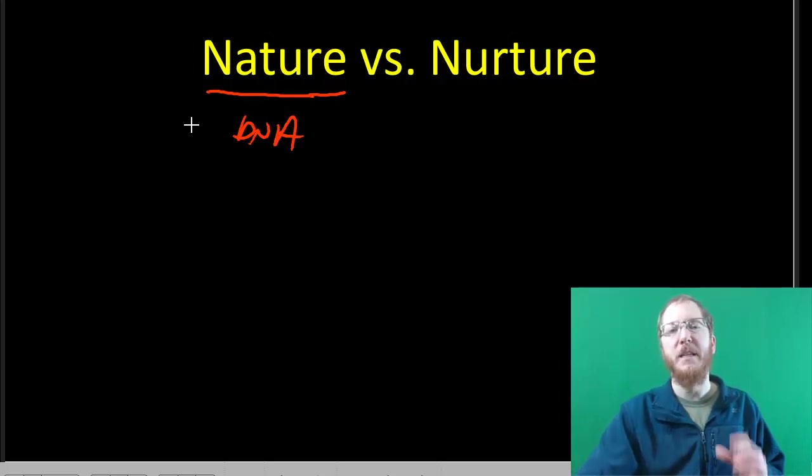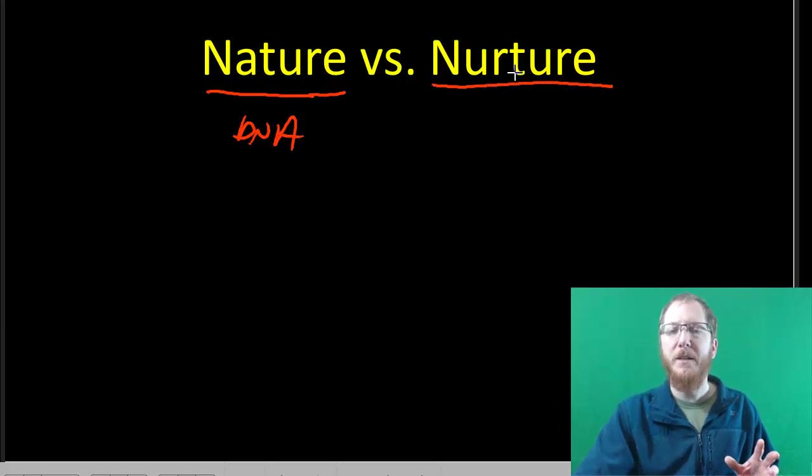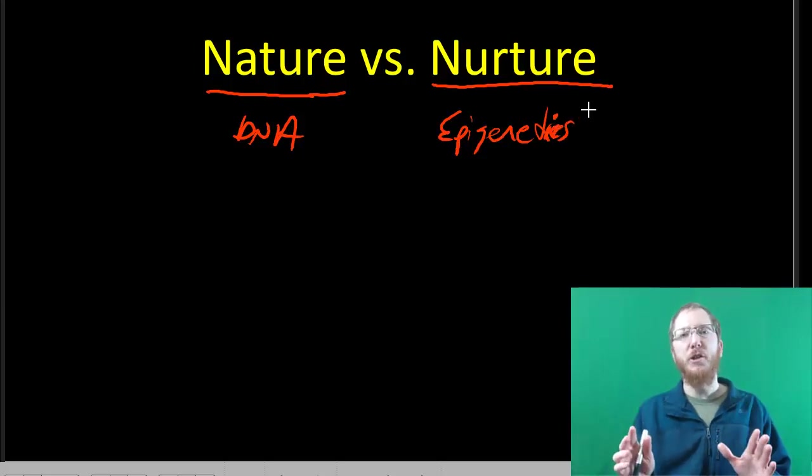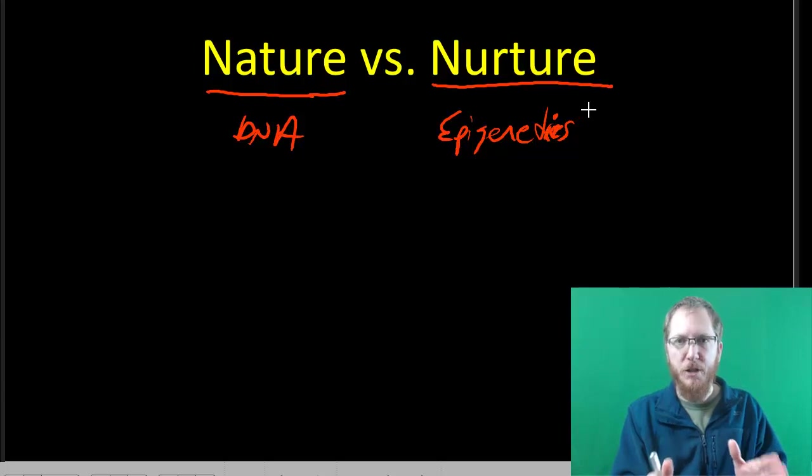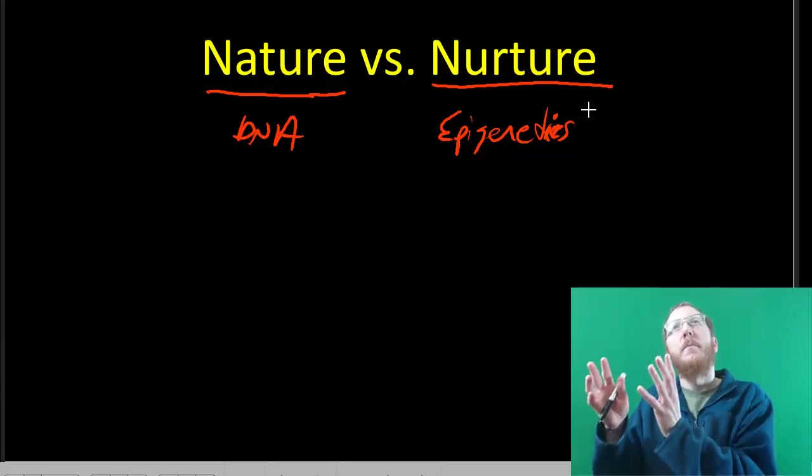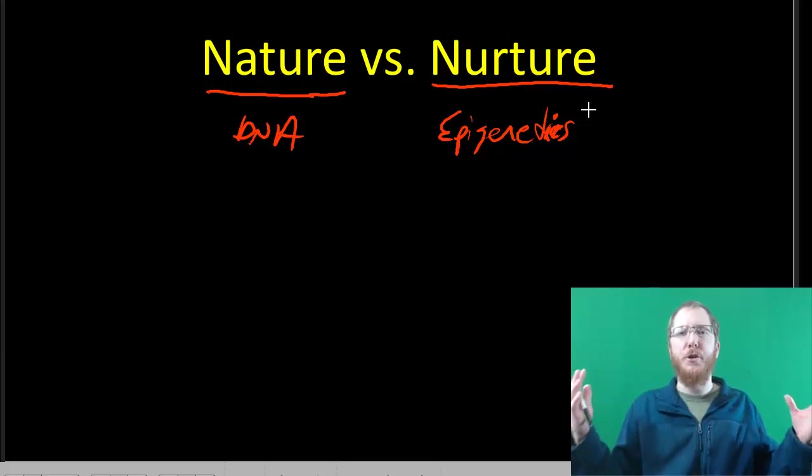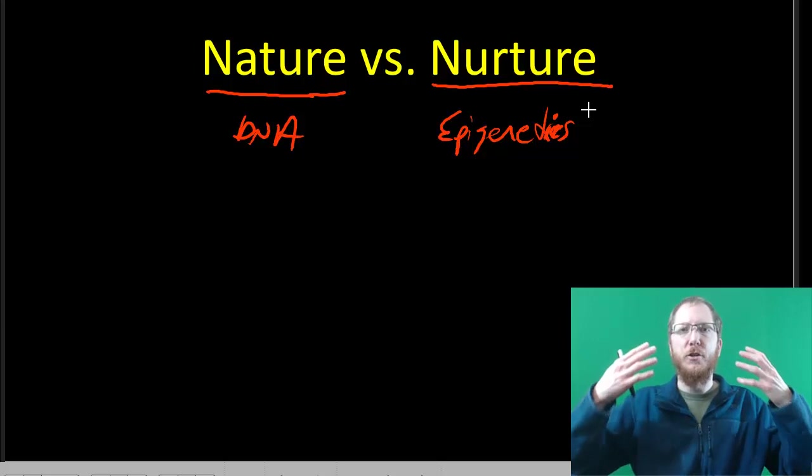But then there's also nurture, which is the environmental situation you're in that also has a big impact. This nurture part's going to be the epigenetics. This is what controls expression, essentially what controls what genes are on or off. It's going to be a mixture of your DNA, the genes you possess, and how your DNA is on or off, what's happened to you in your life that's caused certain genes to be turned on or off that ultimately determines who you are as a person.